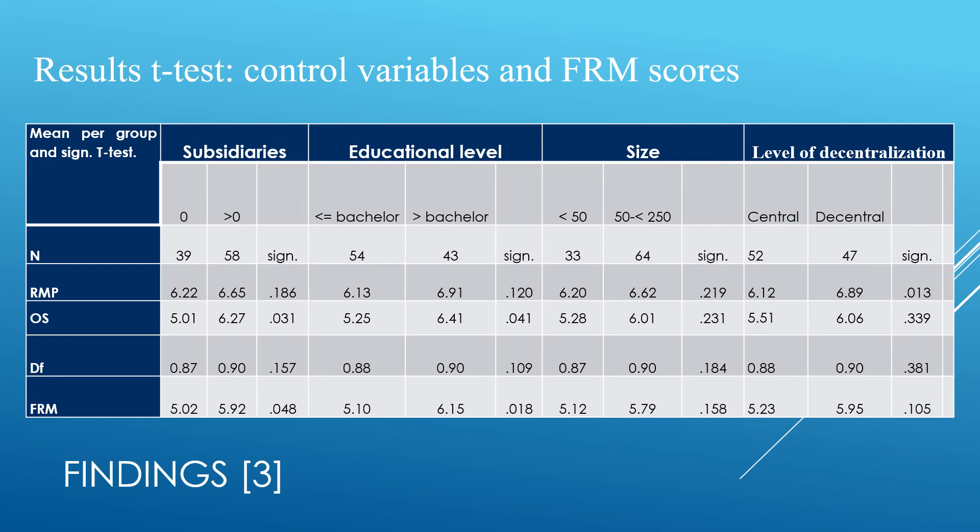Moreover, our study implies that highly educated risk managers pay more attention to the organizational structure. Also, SMEs that contain subsidiaries reach a higher score on the risk management process, as well as on the total financial risk management score. Noticeably, no evidence is found on size to be a determinant for the level of financial risk management at SMEs.